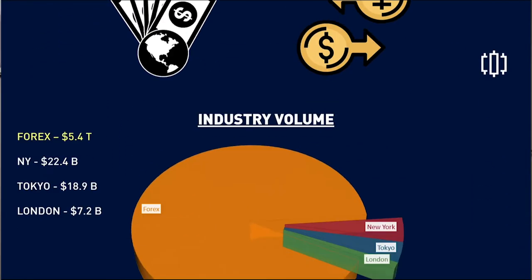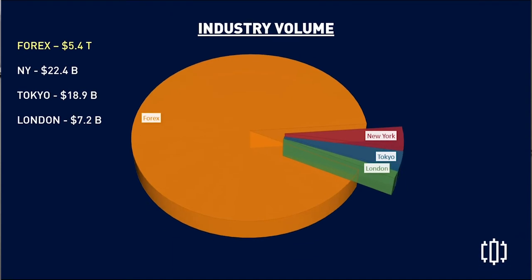People often mistake it for stocks, but when we check the industry volume — for example, New York is $22.4 billion, Tokyo is $18.9 billion, and London is $7.2 billion per day — that's the volume circulating in those industries daily.